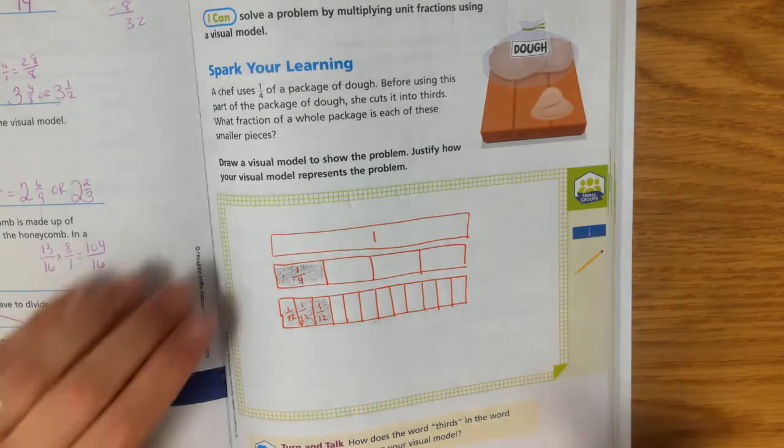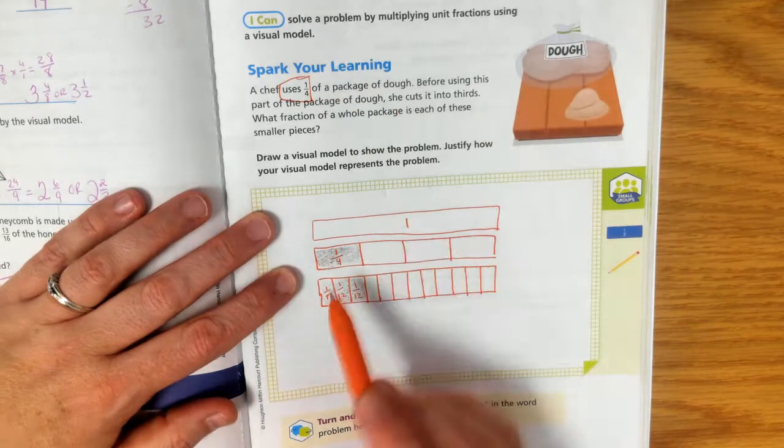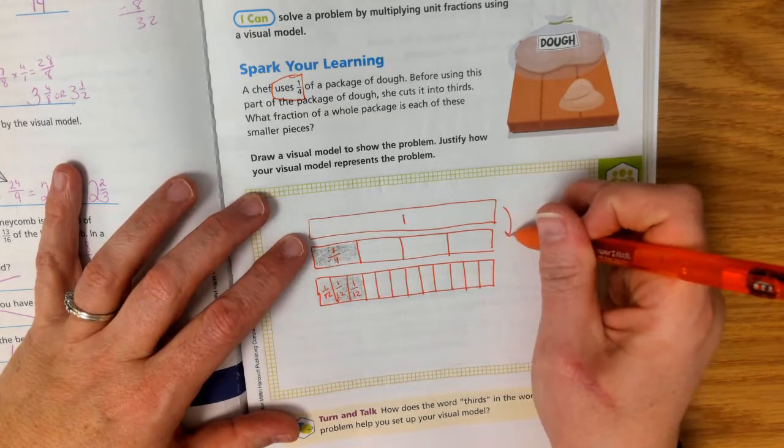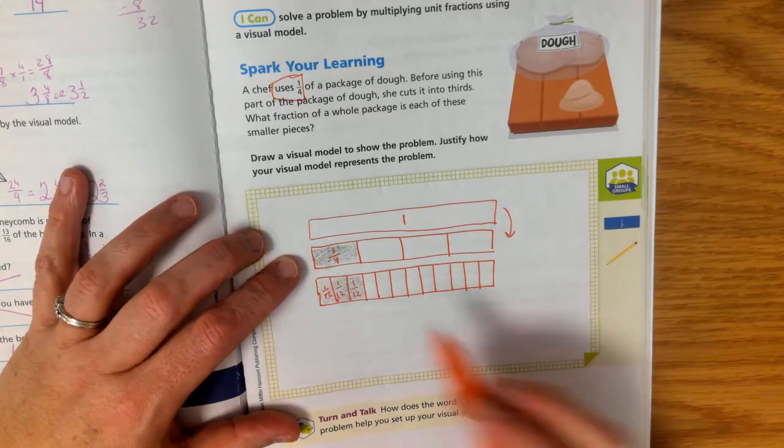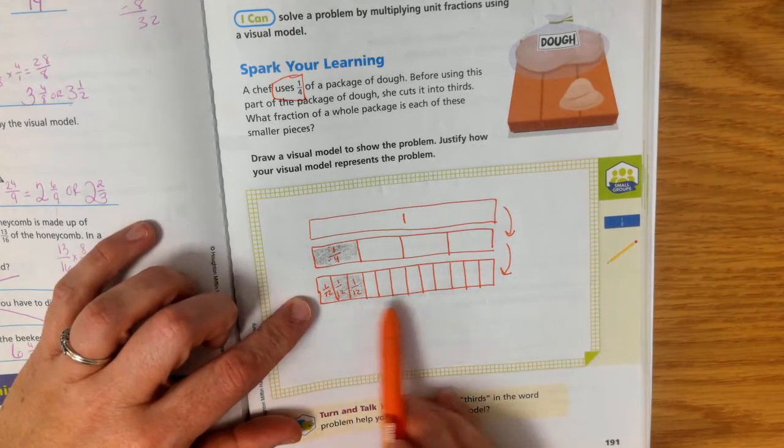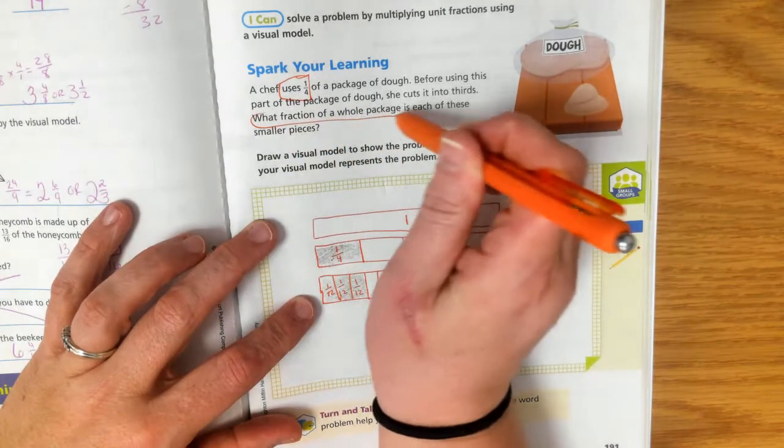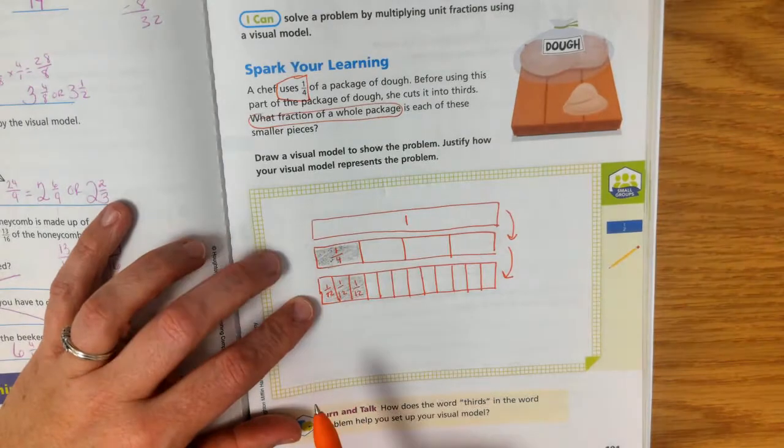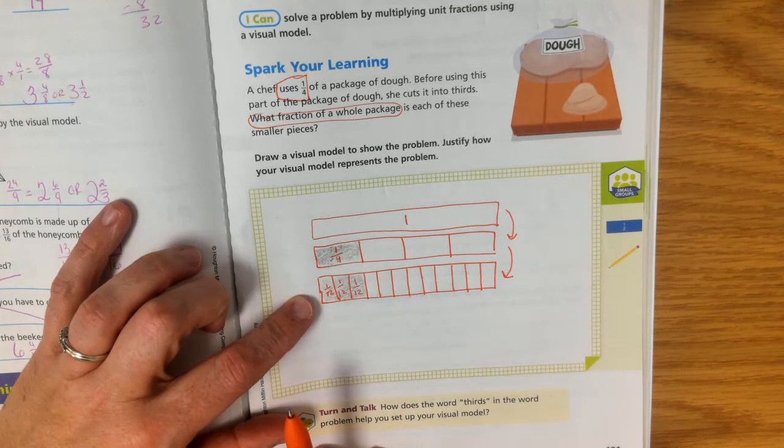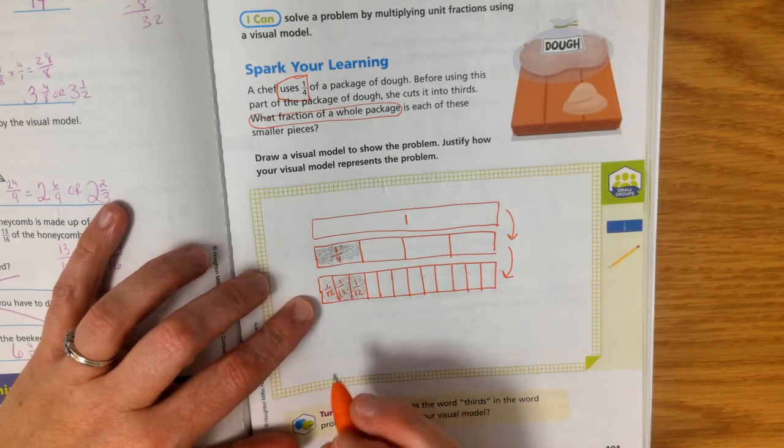So I want you to see that as a picture. We started with a whole. She uses one-fourth, so we took our whole and I broke it into fourths. Then I took those fourths, and I broke the fourths into thirds. But they wanted to know what it was of the whole. It says what fraction of the whole package is each of these smaller pieces. So by taking the fourths and breaking each of the fourths into thirds, then I can see that I have twelfths.